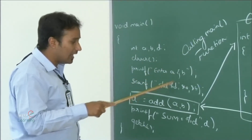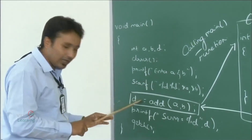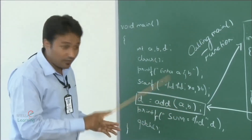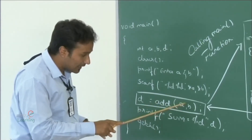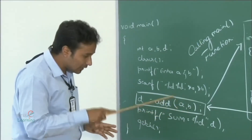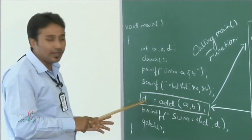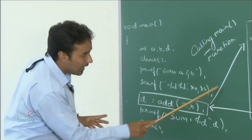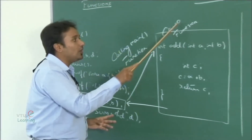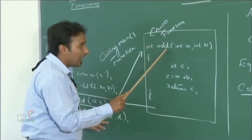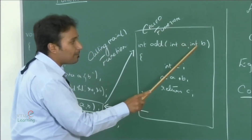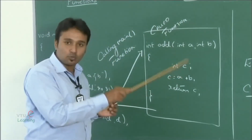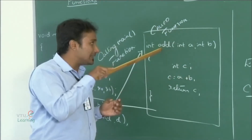The values of a and b are entered using scanf statements. We can observe that d equals add(a, b) — here we are calling the function add which contains parameters a and b, and the computed result will be saved in variable d. As soon as the control goes to add(a, b), it moves to the called function. The called function is add(int a, int b), where a and b are the two parameters passed, and int c is a variable declared inside the called function.